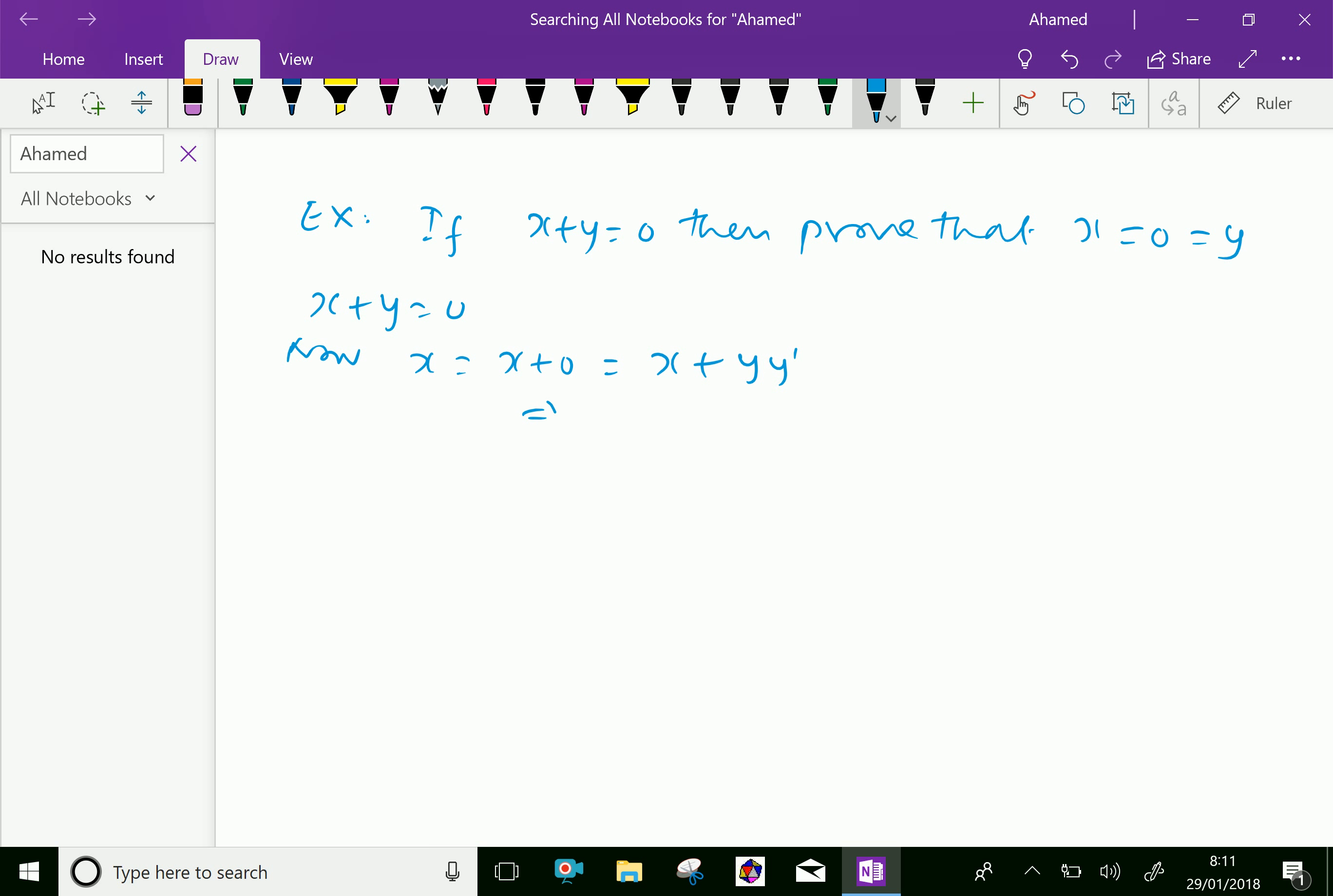Further, which is equal to x + y, times x + y'. Here, x + y is already 0, times x + y', which is equal to 0. Keep this as equation 1.